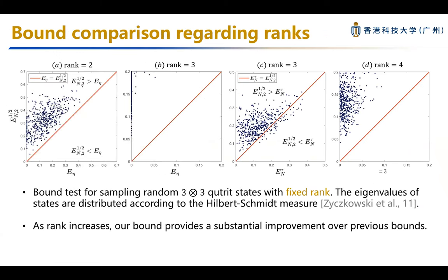We also apply our bound for states with different ranks to compare with previous bounds. As the rank increases, our bound provides substantial improvements. For example, in a three-by-three system at rank three, previous bounds vanish while this bound still works well. When compared with the tempered log-negativity bound at high rank, our bound also performs better.